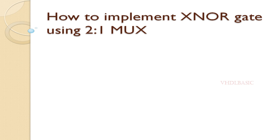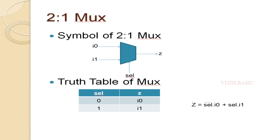Hi, hello, welcome to VHDL Basics. Today we are going to implement an XNOR gate using a 2:1 MUX. This is the 2:1 MUX simple diagram where I0, I1, and Select are the inputs and Z will be the output.